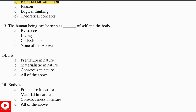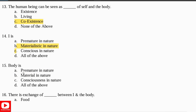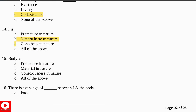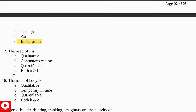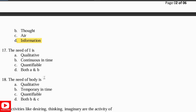Self-exploration uses two mechanisms: natural acceptance and experimental validation. A human being can be seen as a coexistence of self and body. Question 15: I — that is, myself — is conscious in nature, and the body is material in nature. Question 16: There is an exchange of information between I and body. Question 17: The need of I is both qualitative and continuous in time.